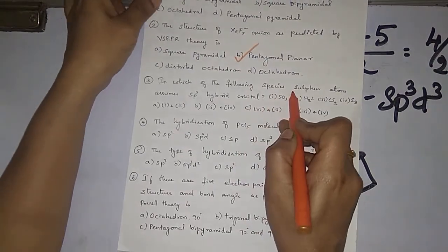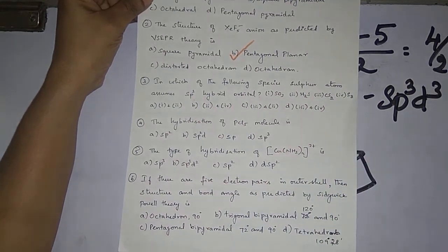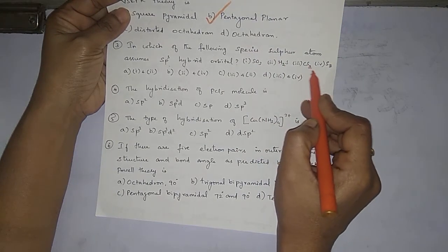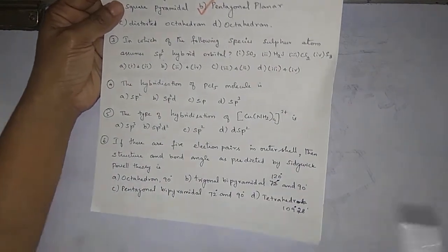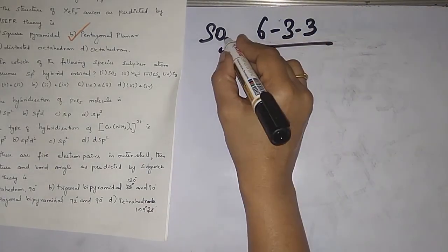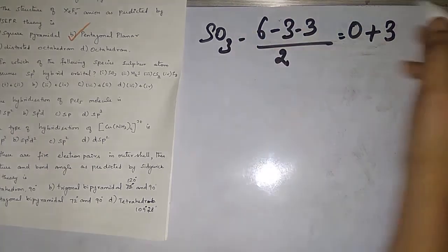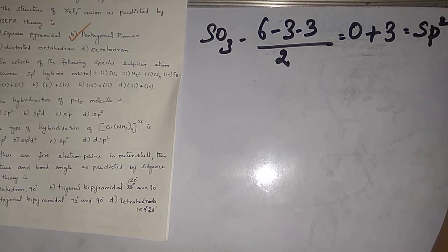Third question: in which of the following species does the sulfur atom assume sp3 hybrid orbitals — SO3, H2S, CS2, or S8? For SO3: sulfur has 6 valence electrons, minus 3 bonded atoms divided by 2 gives zero lone pairs, plus 3 bonded atoms = 3, which is sp2. So SO3 is not sp3.